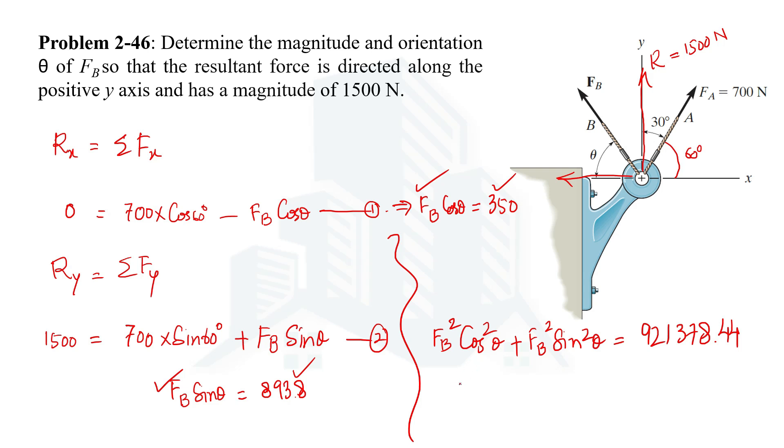Now taking Fb square as common, sin square theta plus cos square theta would be equal to 1. Then Fb would be equal to the square root of this value: 959.88 Newton. So this will be the magnitude of this force.